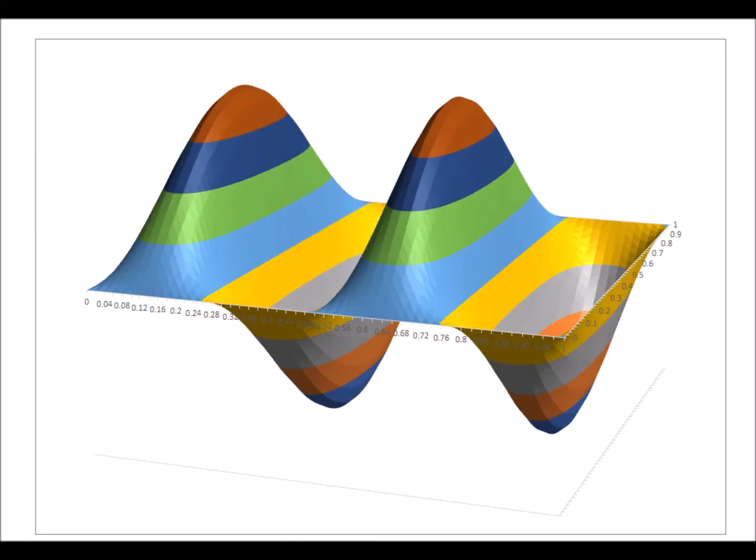Now, if we change the m value to 1 and the n value to 4, then we're going to get a three-dimensional graph that looks like what you see on the screen right now.